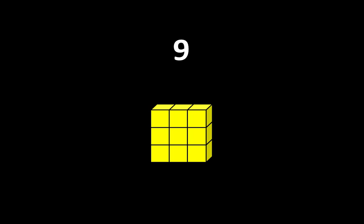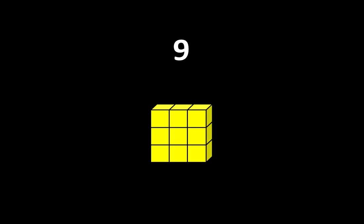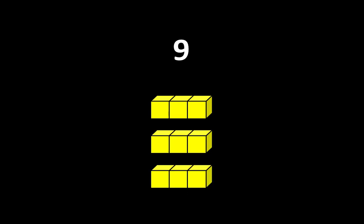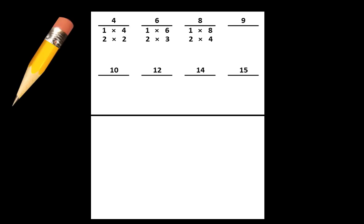What about 9? We can think of 9 as 1 group of 9 or 9 groups of 1. We can also think of it as 3 groups of 3. On your paper, write that we can think of 9 as 1 group of 9 or 9 groups of 1, and we can also think of it as 3 groups of 3.